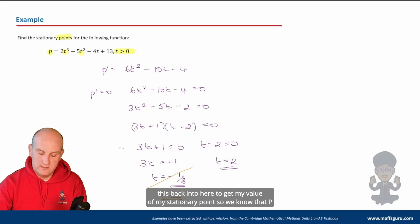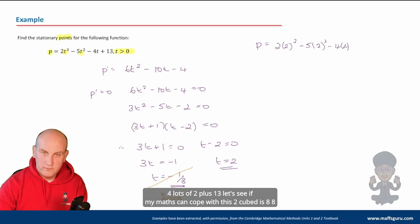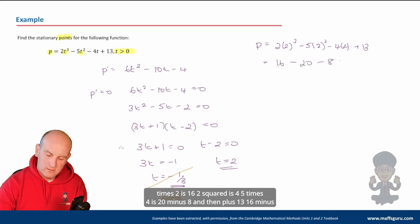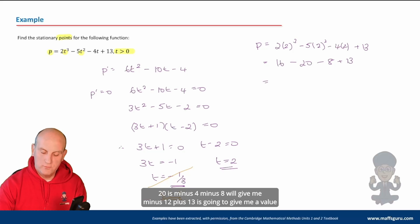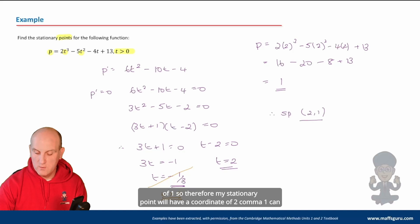p = 2(2)³ - 5(2)² - 4(2) + 13. So: 2 × 8 = 16, minus 5 × 4 = 20, minus 8, plus 13. That gives 16 - 20 - 8 + 13 = 1. Therefore my stationary point has the coordinate (2, 1).